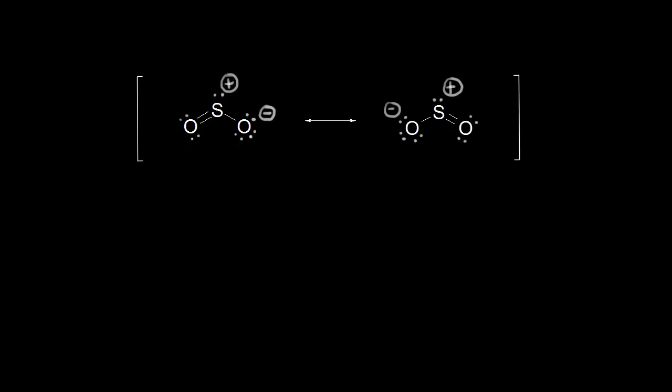In the previous video, we looked at the dot structure for sulfur dioxide, and I drew out two resonance structures - the resonance structure on the left and the resonance structure on the right. And some people disagreed with me and said that's not the dot structure for sulfur dioxide.